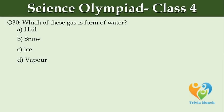Which of these is the gas form of water? Option A: hail. Option B: snow. Option C: ice. Option D: water vapor.